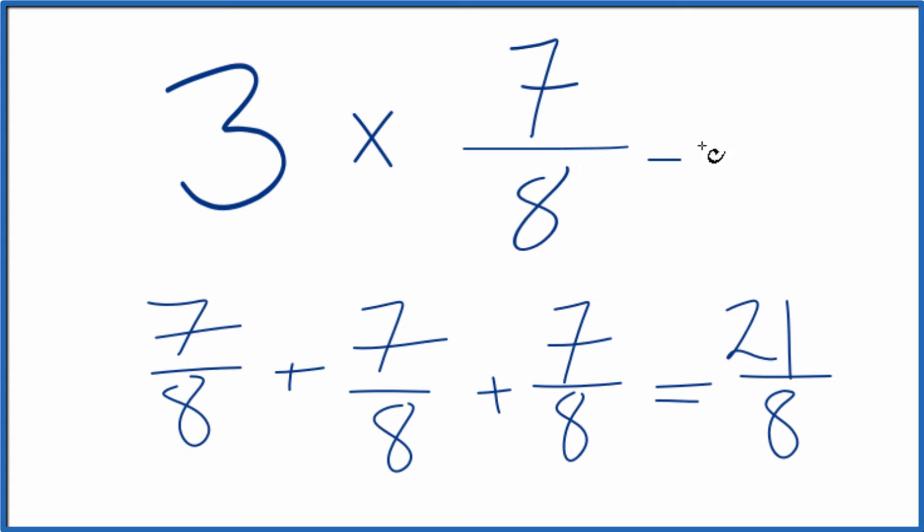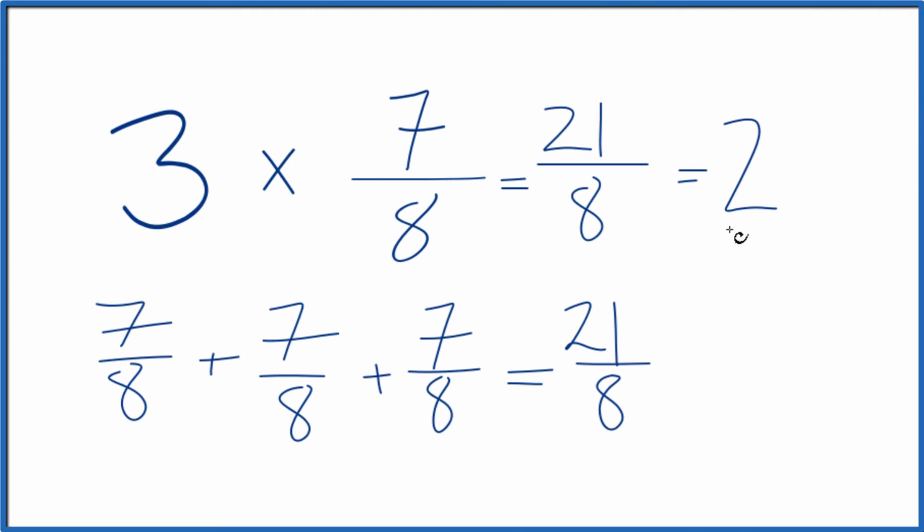So 3 times 7 eighths, that equals 21 eighths. This is an improper fraction because the numerator is larger than the denominator. Let's change it to a mixed number. 8 would go into 21. 2 times 8 is 16. And then we'd have 5 left over. So 2 and 5 eighths, that's the same thing as 21 eighths.